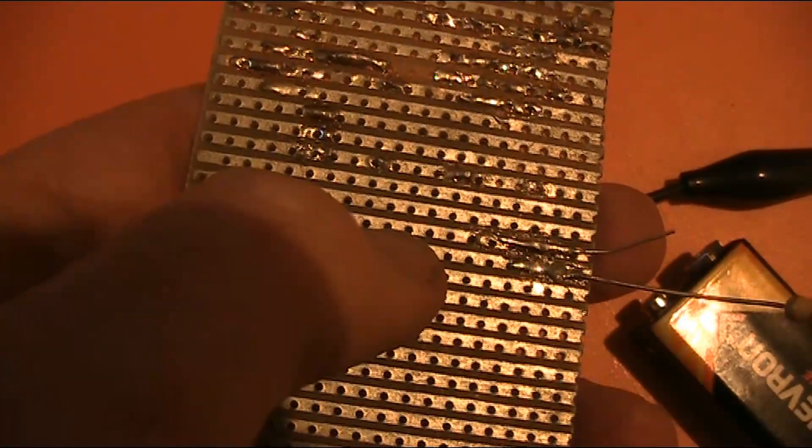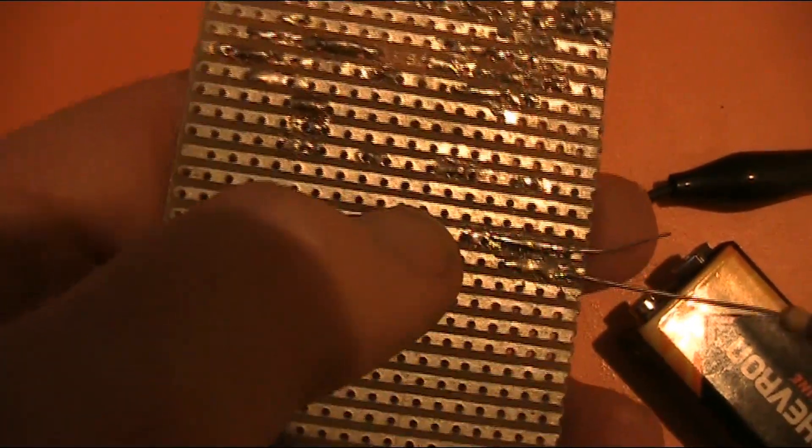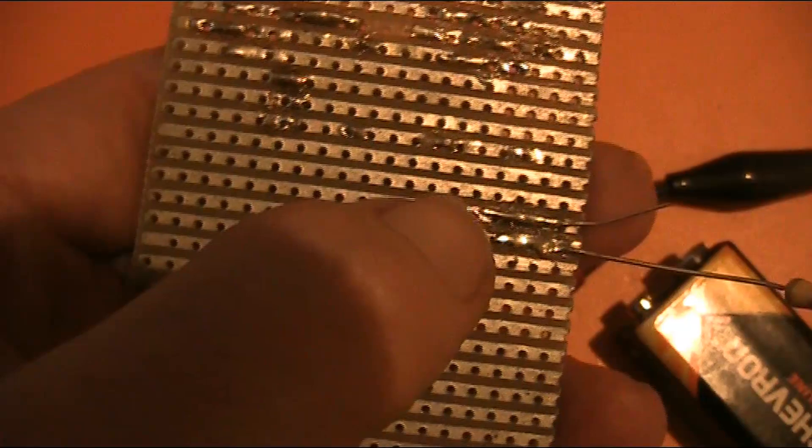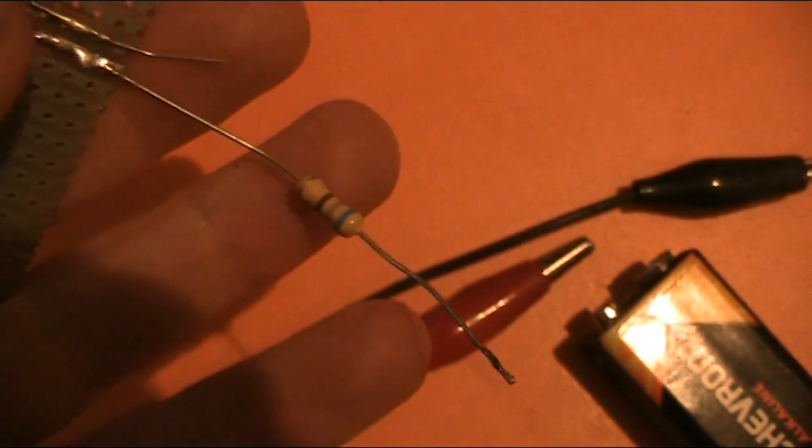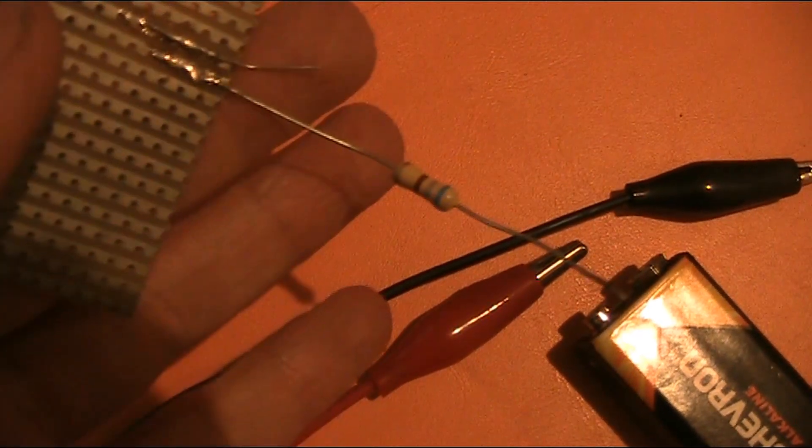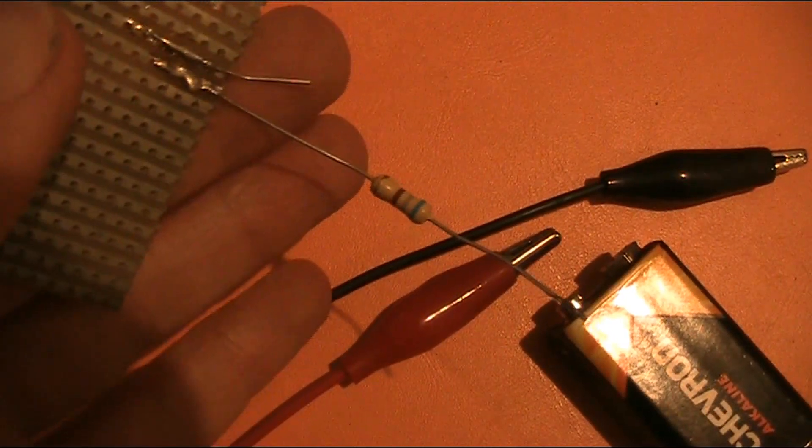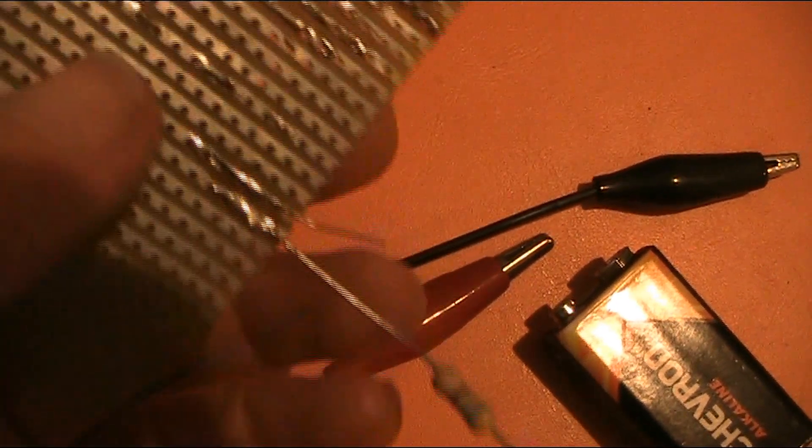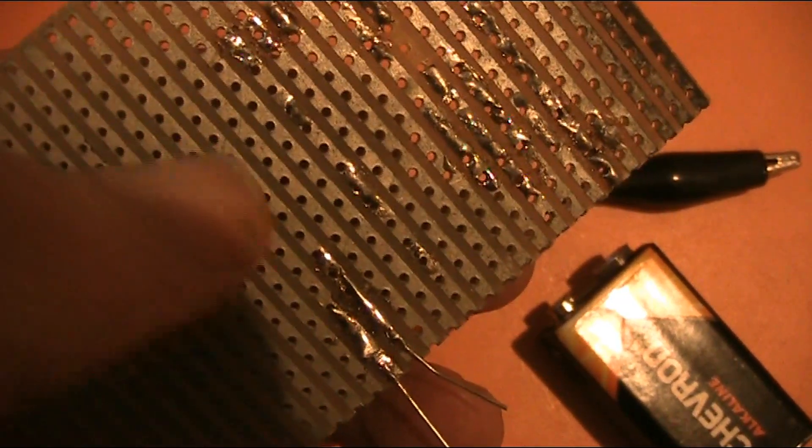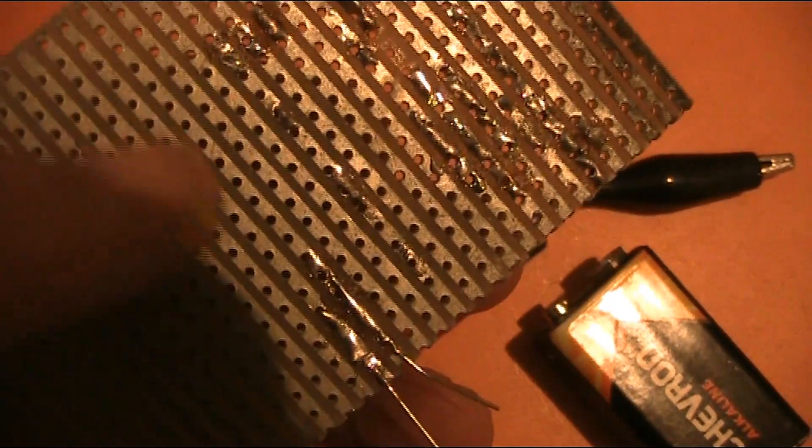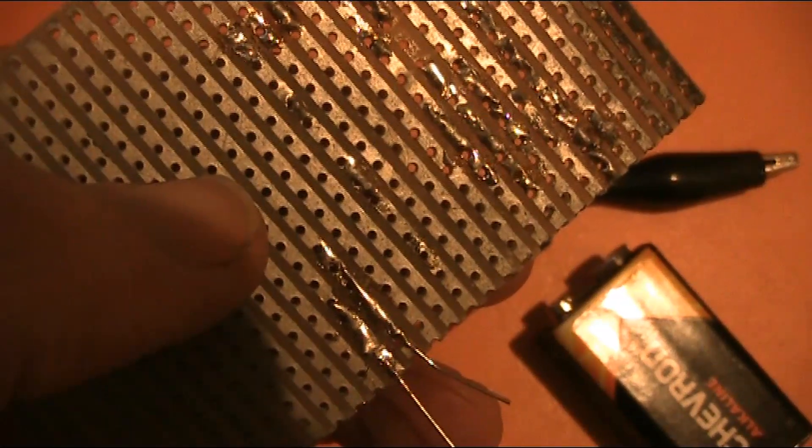I've just made this LED test jig. It's some Vero board just using two adjacent tracks. There's a 680 ohm resistor and then I'll use these clip leads to connect to a 9 volt battery. So I can just put the bottom of the LEDs along these tracks and I'll quickly be able to test them.